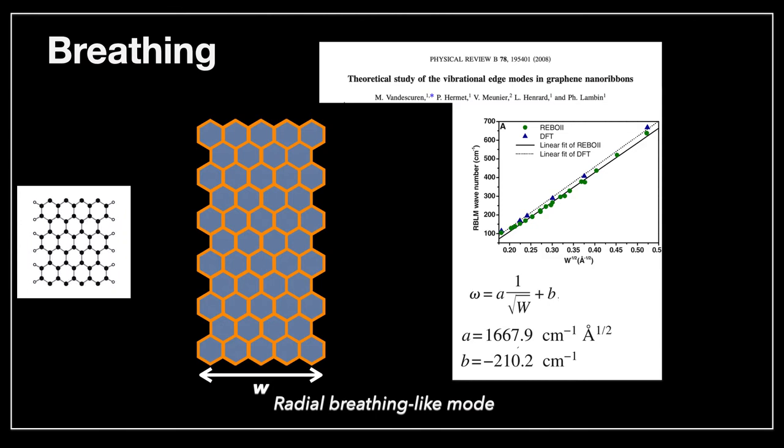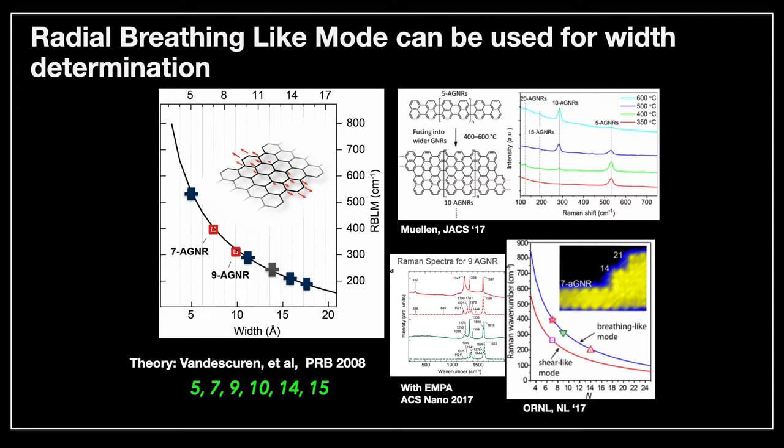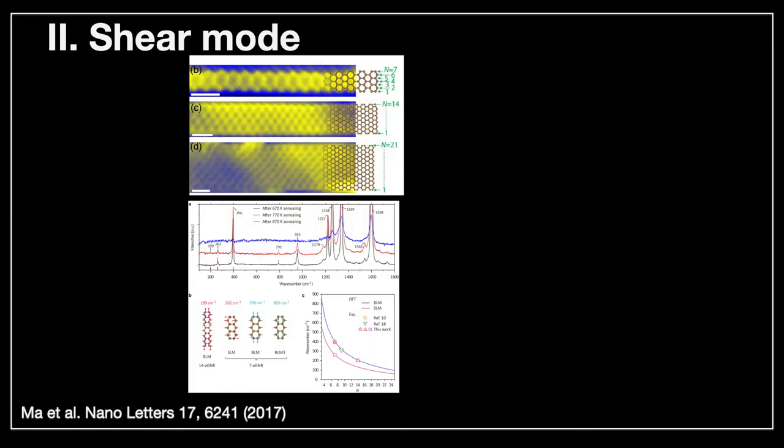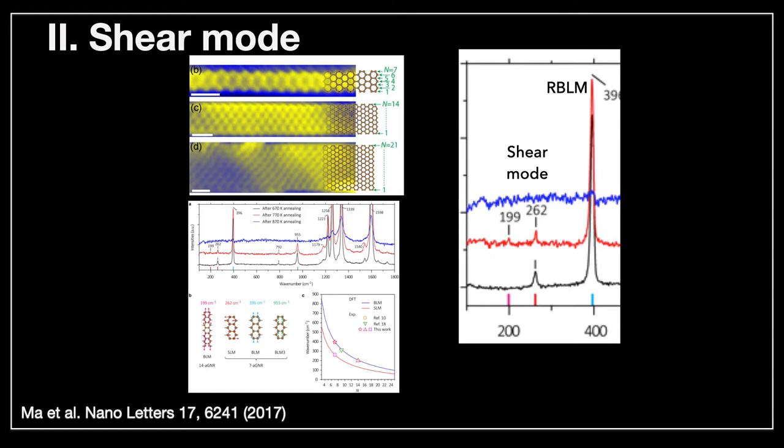Experimentally, this is a summary of all the data that have been obtained so far, where we have the radial breathing mode as a function of the width. Indeed, those points fall in a nice curve, and there is a one-to-one correspondence between the width and the breathing mode. When there was this experiment done by Ann Ping Li, if you look very carefully in the area where we see the radial breathing mode, we have the radial breathing mode which is large. But there are also other peaks obtained here. That peak comes from a batch of GNR 7, 14, and 21 that were obtained by the zipping method. One of the peaks at 199 can be identified using our DFT calculations as a breathing mode of the larger GNR. But there is another peak at 262, and that peak is actually a shear mode.